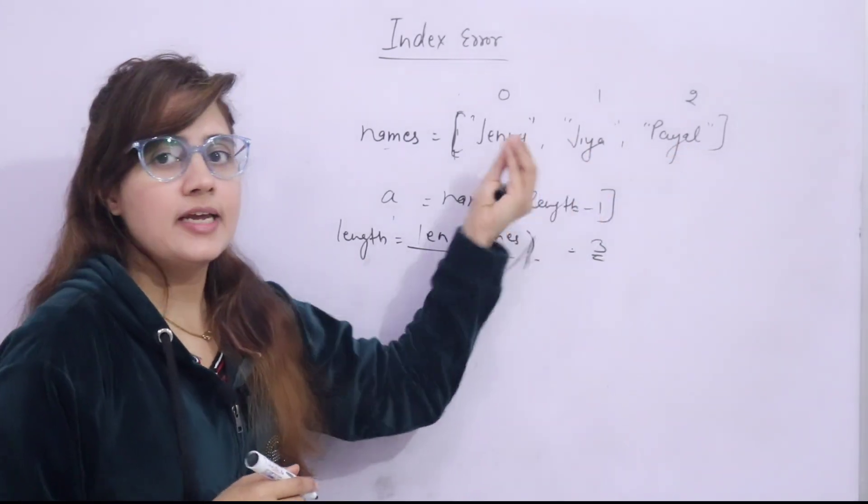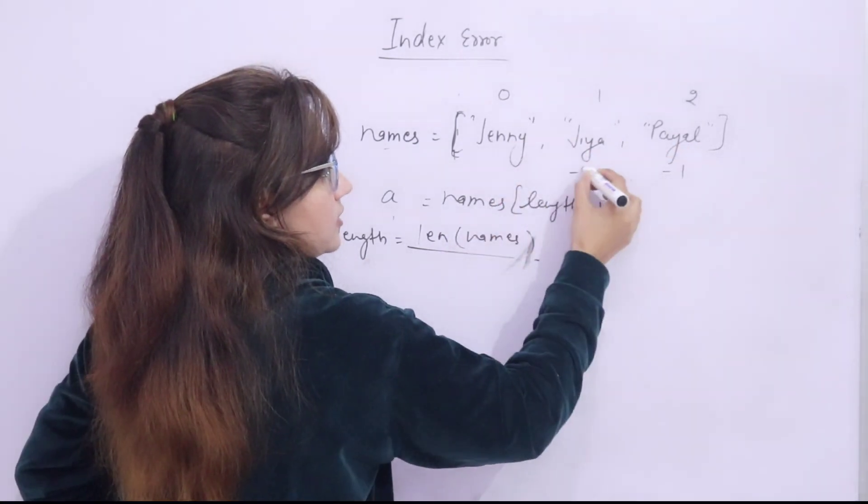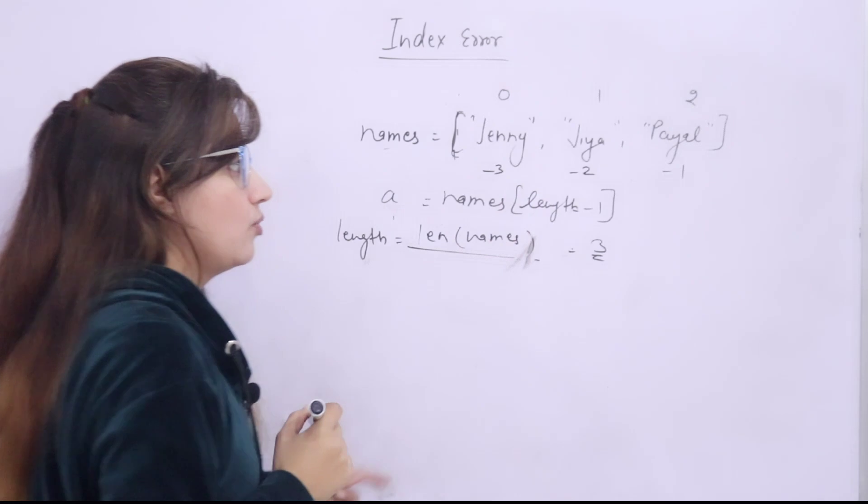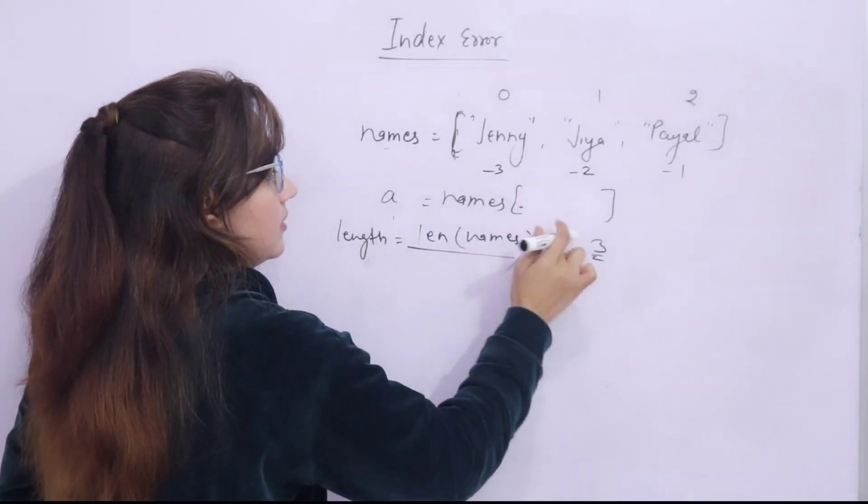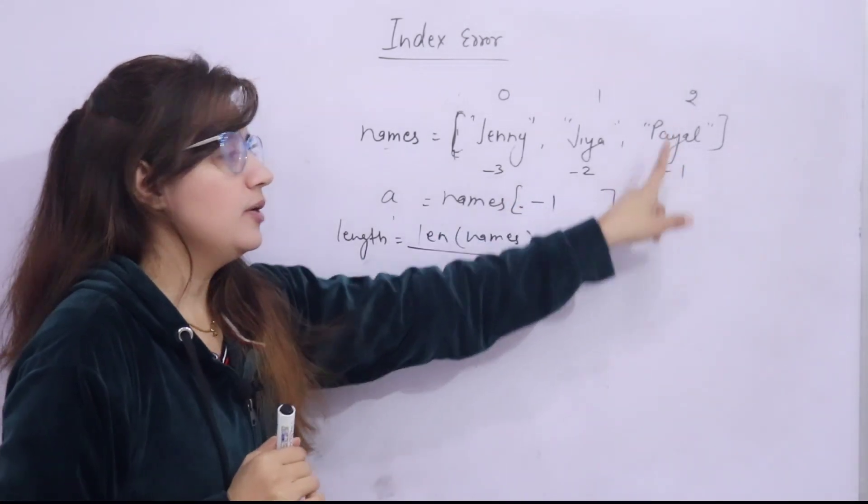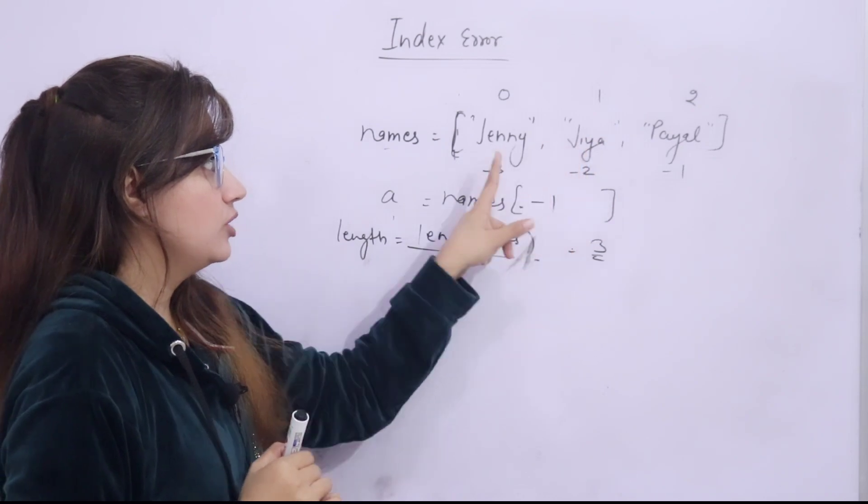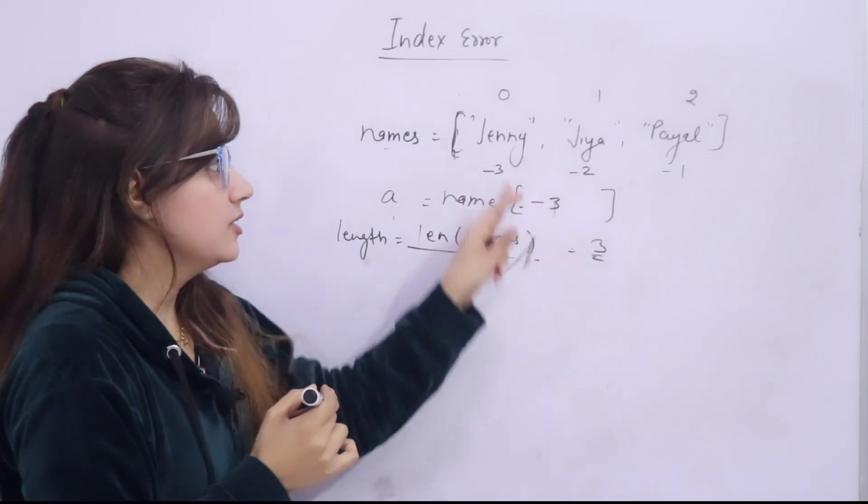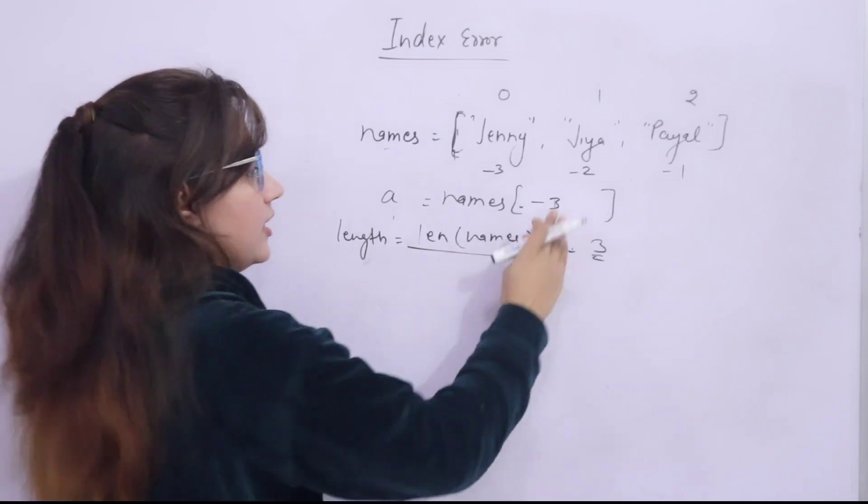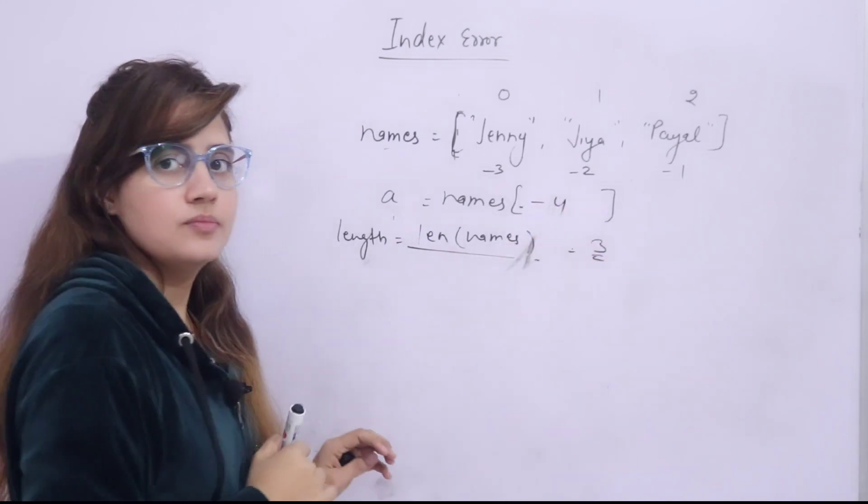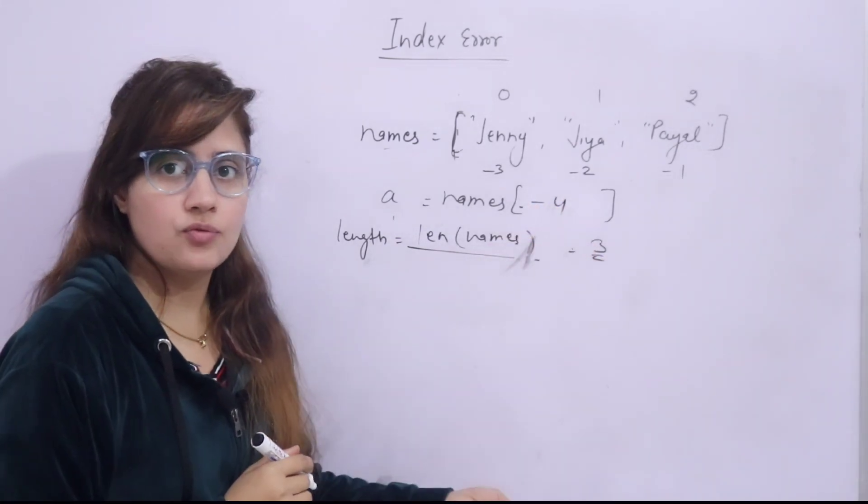Second case is if you are using negative index like minus 1, because in list negative indexing is allowed. So if I write here names minus 1, it will print Payal, minus 2, Jiya, minus 3, Jenny. But if you want to access the first element using negative index and if you write minus 4, then it will same error, index out of range.